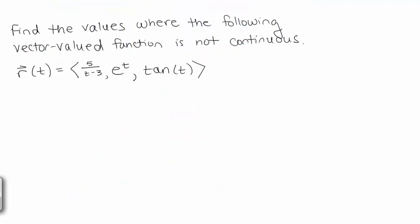Now we are asked to find the values where the following vector valued function is not continuous. A vector valued function is not continuous where any of its components are not continuous. So e to the t is always continuous. 5 over t minus 3 will not be continuous where the bottom equals 0, so that would be when t equals 3.